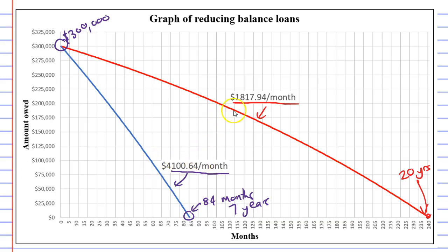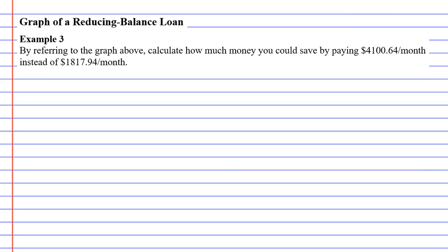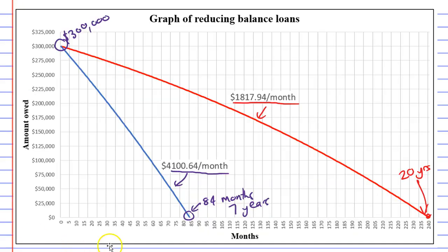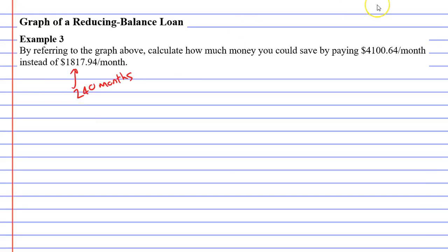So going back to the graph, you'll notice that the cheaper repayment took 240 months before it was fully paid off. So we'll write little notes here. This one took 240 months to pay off the loan. While the other one was a lot shorter. It took 84 months. So we'll write that up here. After 84 months, the loan was fully paid.